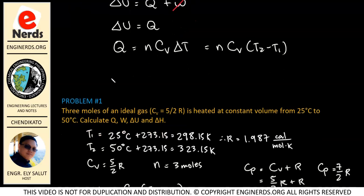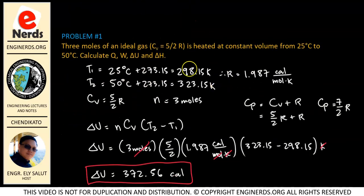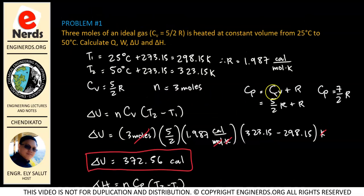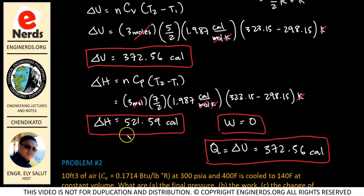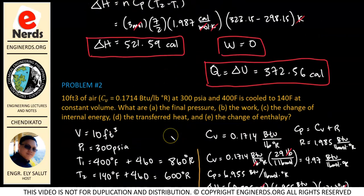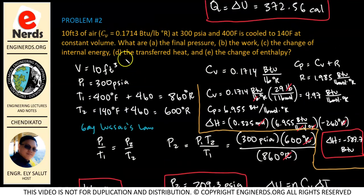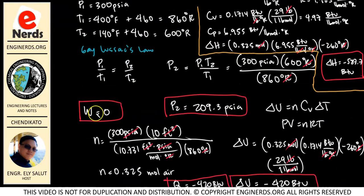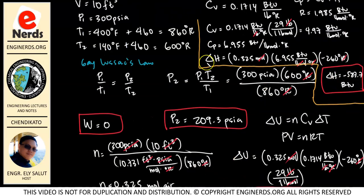To apply that, we will be solving three problems. The first problem involves determining delta U, delta H, W, and Q. Problem two is similar — we will calculate W, the final pressure, Q, delta U, and delta H.